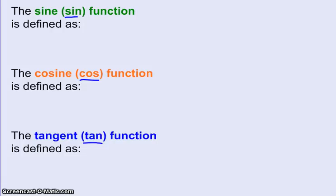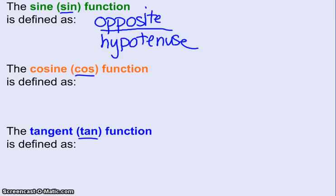This is what they are defined as. They are all ratios where the sine is defined as the opposite over the hypotenuse. So just write that down. We'll practice what that means later, but hopefully you recognize opposite and hypotenuse as being sides of a right triangle.